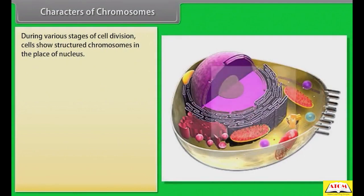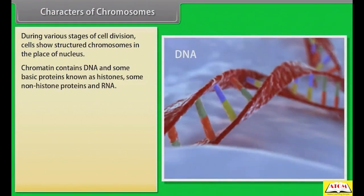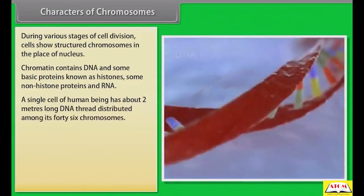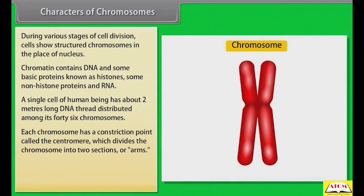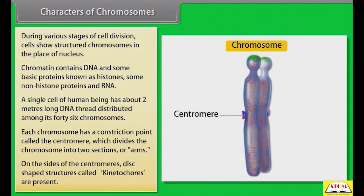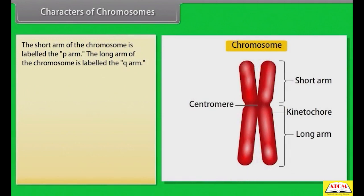During various stages of cell division, cells show structured chromosomes in the place of the nucleus. Chromatin contains DNA and some basic proteins known as histones, some non-histone proteins, and RNA. A single cell of a human being has about 2 meters of DNA thread distributed among its 46 chromosomes. Each chromosome has a constriction point called the centromere, which divides the chromosome into two sections or arms.